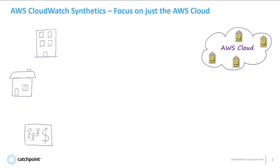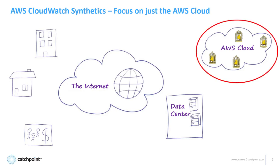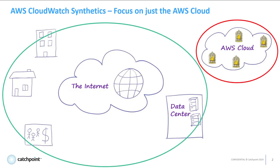And to add to the complexity, for these users to even get to the AWS cloud, they'll need to traverse the internet, and most likely there are SaaS applications scattered across multiple data centers they'll need access to also. So as you can see, relying on AWS CloudWatch Synthetics leaves many blind spots when trying to understand what the true performance of your end-users is, and your users and customers is what it's all about.